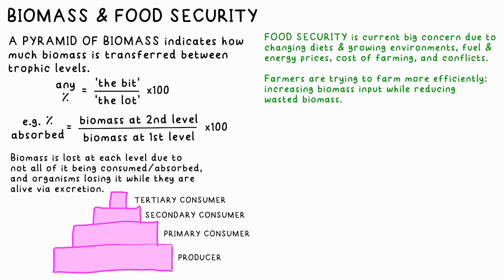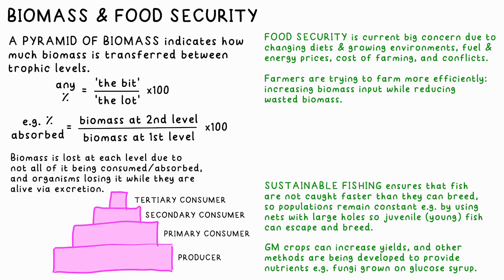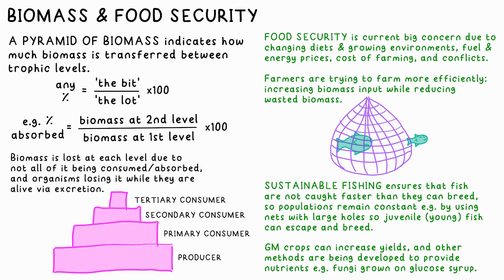Food security is a big thing, especially in these uncertain days. Food is becoming scarcer due to increasing world population, changing diets, food being transported around the world which requires huge amounts of energy, changing growing environments, the cost of farming, and conflicts. For example, around 40% of the world's wheat comes from Ukraine, or at least it used to. Farmers are constantly trying to find more efficient ways of farming, largely by maximising biomass input to crops and animals while also reducing biomass lost by them. Fishing sustainably is also a big thing — if a species is fished at a greater rate than its breeding, then its population can disappear in those areas. One way of sustainably fishing is by having nets with holes that catch adult fish but are big enough to let the little ones out, which escape to then go on and breed.